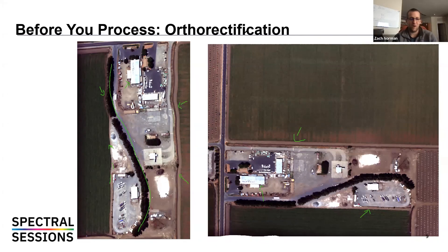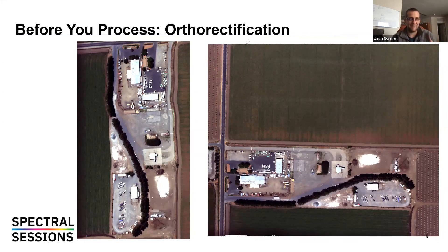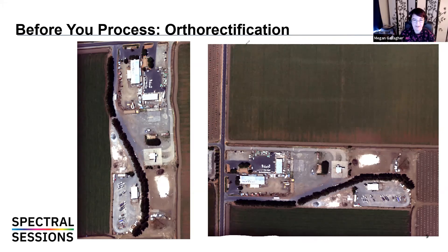One thing to add: some hyperspectral sensors provide IGM files or detailed text metadata files that tell you exactly where the sensor was looking when collecting each row of pixels for push-broom sensors. Processing steps change a bit based on what data you've collected, but the tools are all there — just make sure you know what's x and what's y.